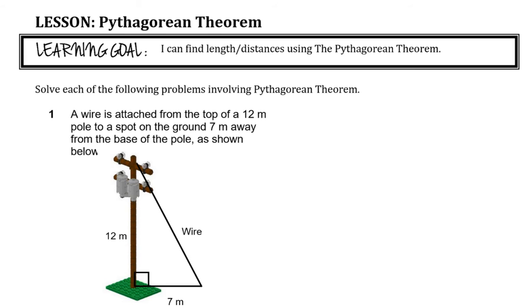It all still comes down to the same thing as the last lesson — how we use Pythagorean theorem to find side lengths. Every triangle has three sides: one is longest and the other two are shorter. We're still going to take that approach. Some of these questions are multiple choice, so you can use that to narrow down the answers — think about what's possible and what's not possible.